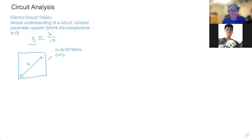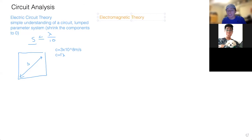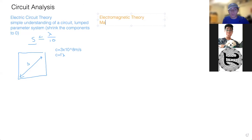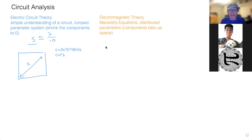Electric circuit theory is nice because we don't have to take into account all the magnetic fields and everything else. However, if you can't use electric circuit theory, that's when you have to use electromagnetic theory. Electromagnetic theory, which you'll learn in Physics 152, deals with Maxwell's equations and distributed parameters — meaning components take up space. You'll encounter four equations dealing with time-varying magnetic and electric fields. Most of the time, you'll stick with electric circuit theory for the entire course.